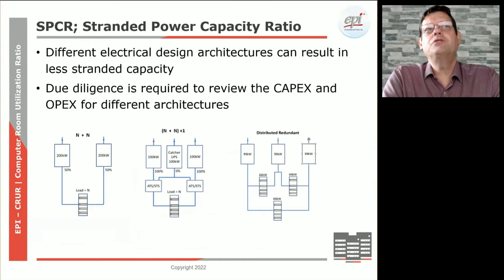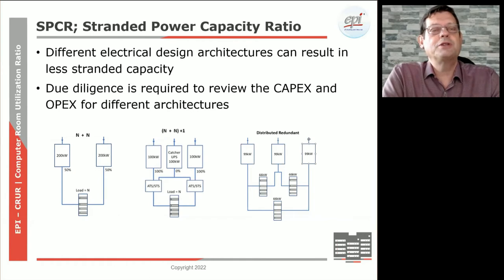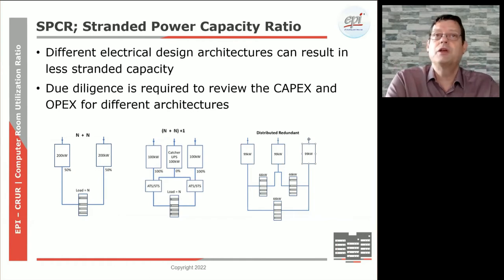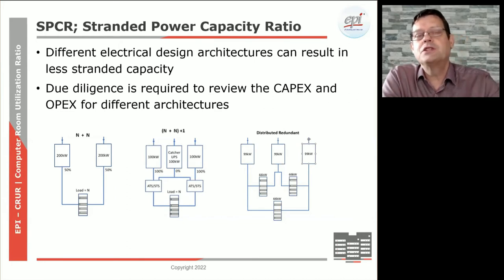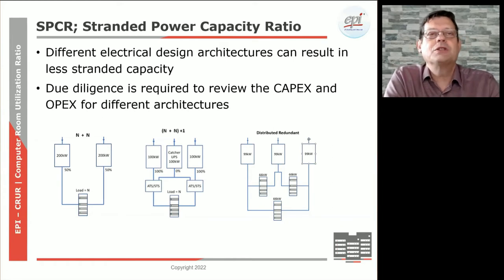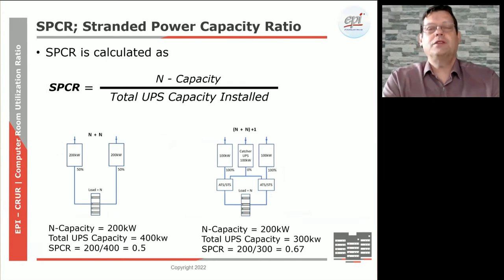In this data center, we have 400 kilowatt capacity installed but are only using 200, so we have 200 kilowatt basically not allocated. You could also have different scenarios — a catcher system or a distributed redundant system — all of which lead to a different stranded capacity. Basically, the SPCR is the N capacity divided by the total capacity installed in the data center, and this number must be calculated based on KW. In the N plus N scenario, if N capacity is 200 kilowatt and total installed is 400, your SPCR will be 200 over 400, coming to 0.5.